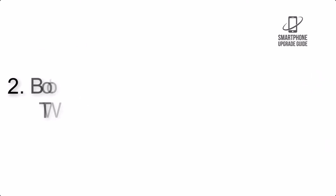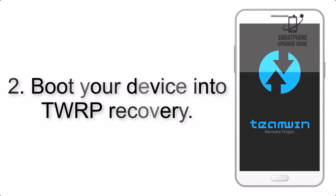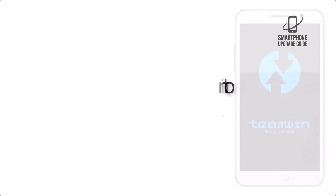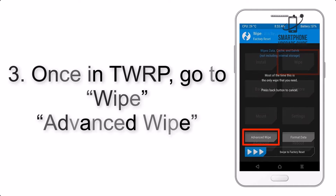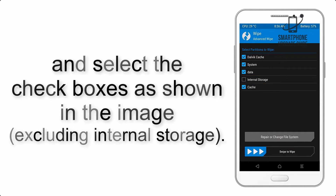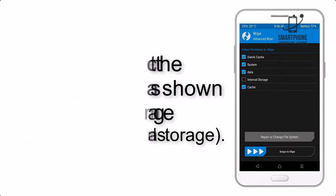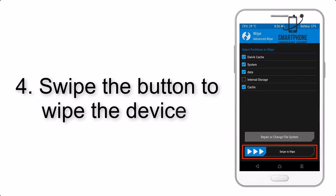Step 2: Boot your device into TWRP recovery. Once in TWRP, click on Wipe, then Advanced Wipe, and select the checkboxes as shown in the image, excluding internal storage.